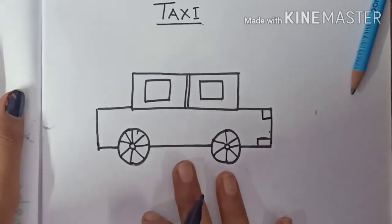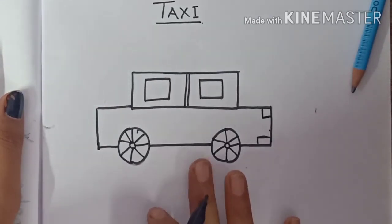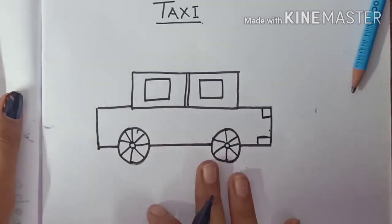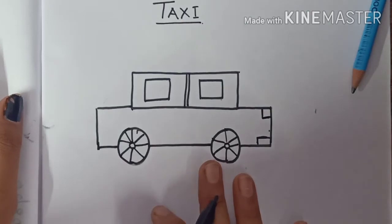So this is a very basic taxi or a car made with shapes for kids. So make this and color this at home students.